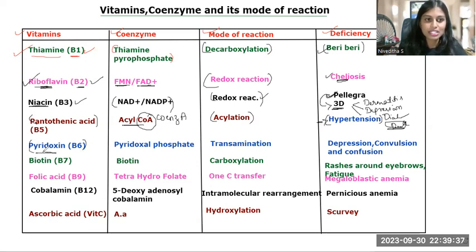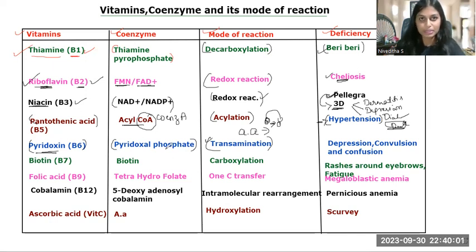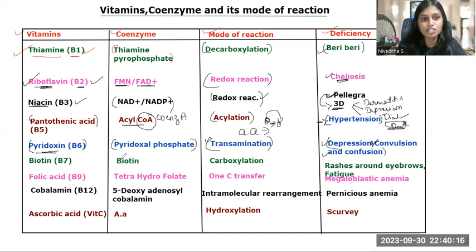Next is vitamin B6, that is pyridoxine. The coenzyme of vitamin B6 is pyridoxal phosphate. The mode of reaction is transamination — the transfer of an amino group from one molecule to another. The deficiency symptoms are depression, convulsion, and confusion.